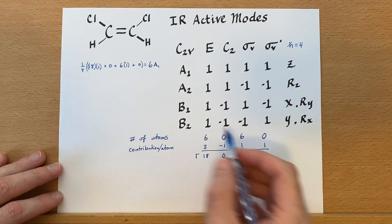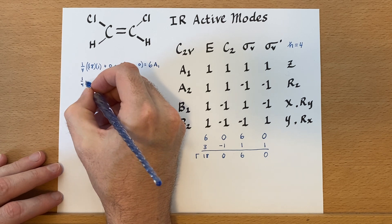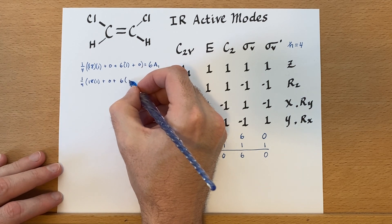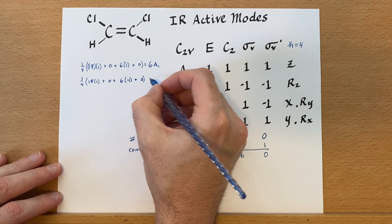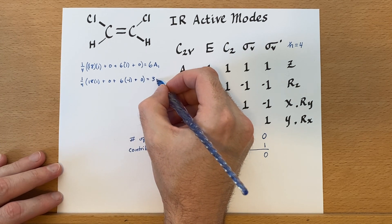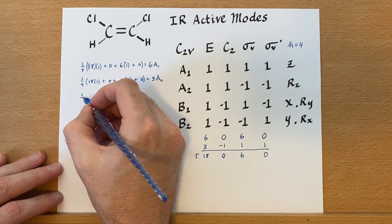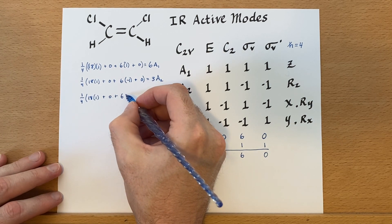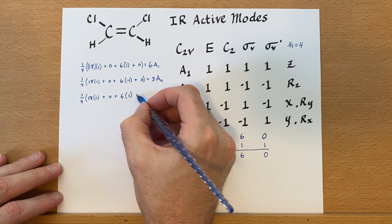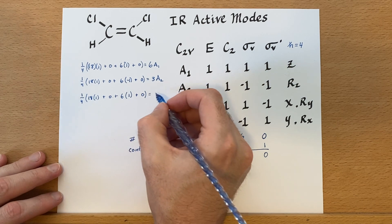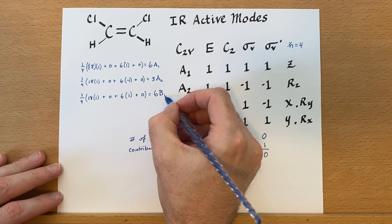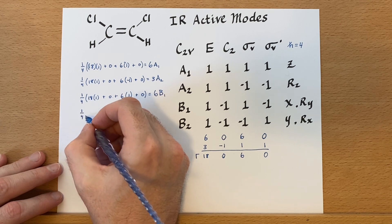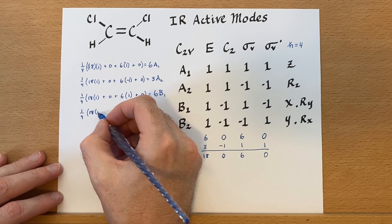And let's do the same thing for the rest of these representations. So, we have three A2s. Six B1s. And...